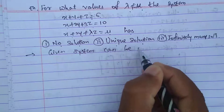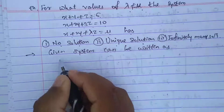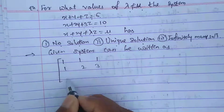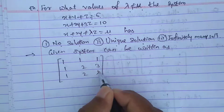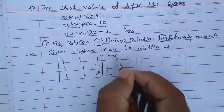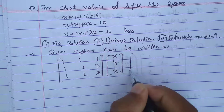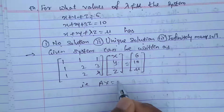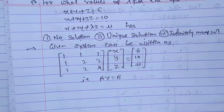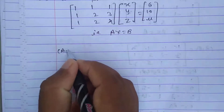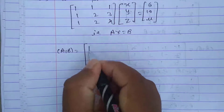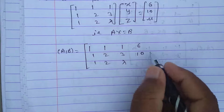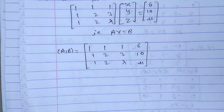The given system can be written as coefficient matrix A = [[1,1,1],[1,2,3],[1,2,lambda]] times the unknown matrix XYZ equals the right-hand side [6, 10, mu], that is AX = B. From this we write the augmented matrix [A|B] as matrix A with the extra column B appended.